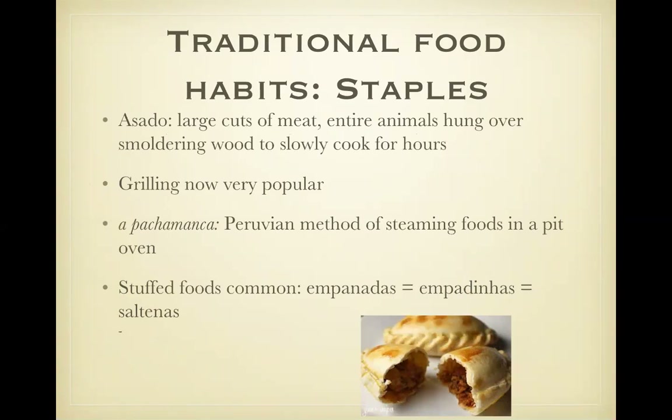Traditional cooking methods. Asado: large cuts of meat, entire animals cooked over smoldering wood — very popular. Empanadas and empanaditas are also very popular. They are a kind of stuffed pocket, usually filled with meat, sometimes spices and onions or cheese.